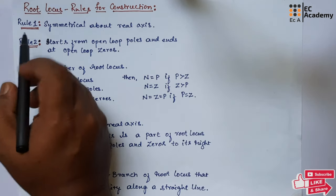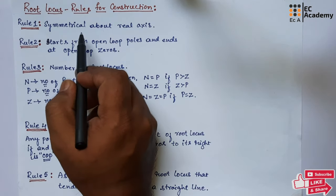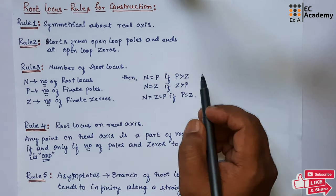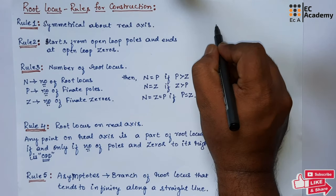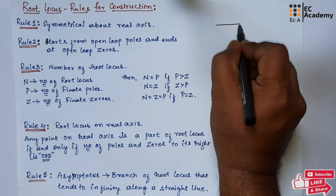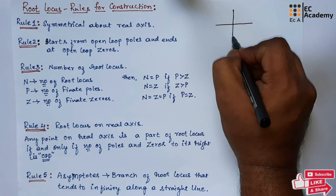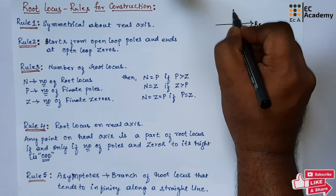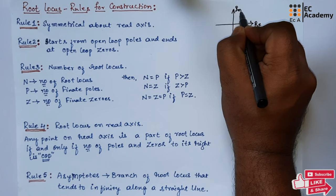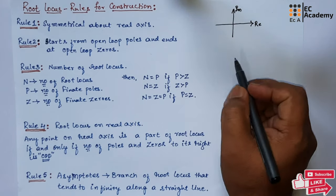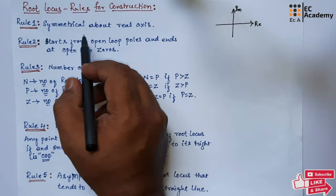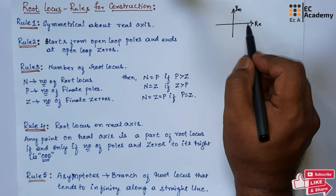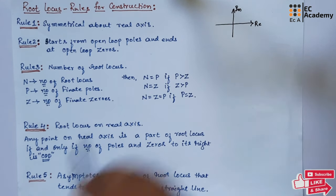Rule 1 states that root locus is symmetrical about the real axis, which means if we take an S-plane with real and imaginary axis, then this root locus will be symmetrical along the real axis.